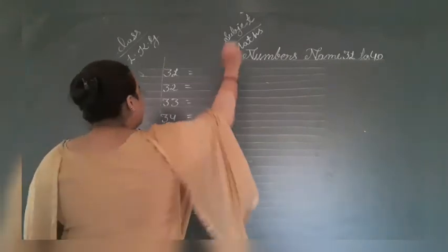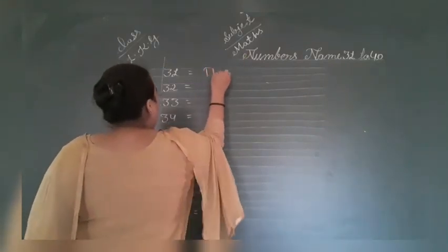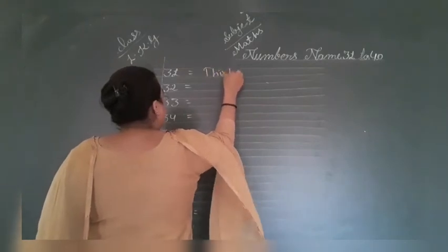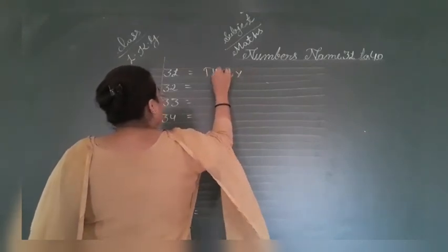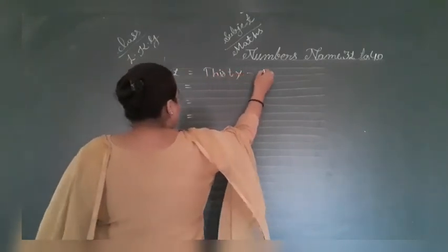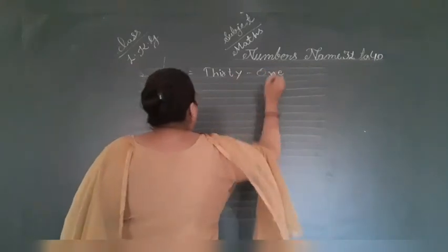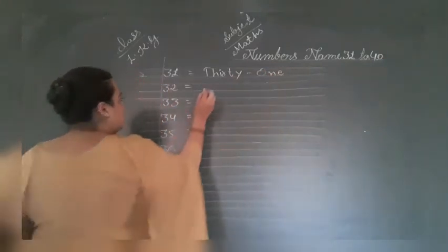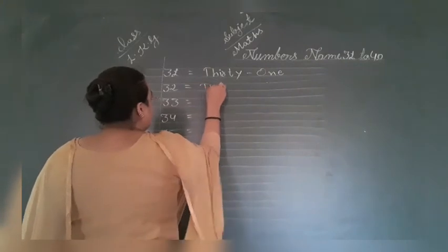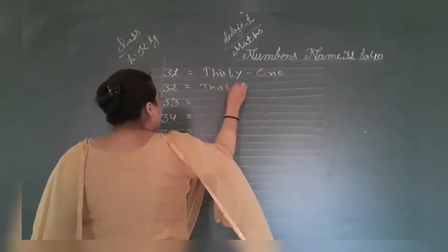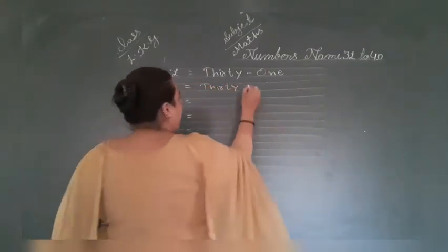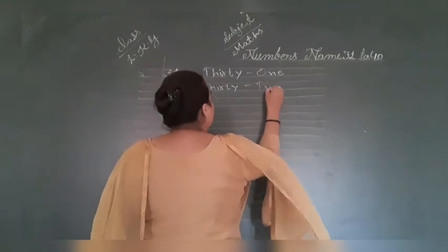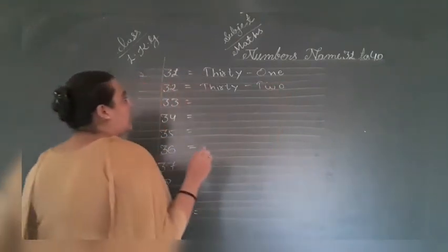So now we start numbers name. THIRTY 30, ONE 1, 31. 32, THIRTY 30, TWO 2, 32.